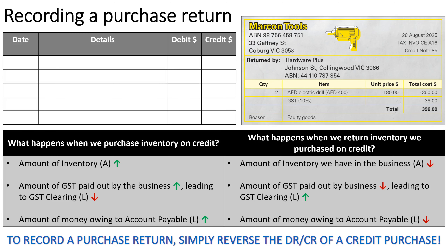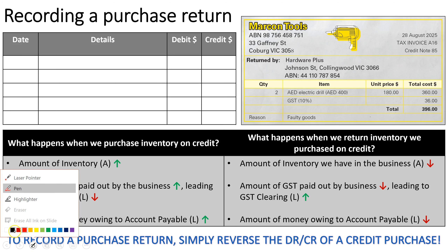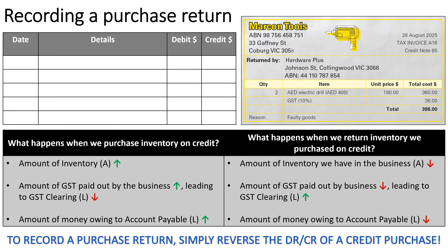How do we record this? If we think back to what happens when we purchase inventory on credit, three things happen: inventory goes up, GST clearing goes down because we're paying that out, and the amount owed to an accounts payable goes up. When we return inventory, the same three accounts are affected, but we're simply reversing what happened.